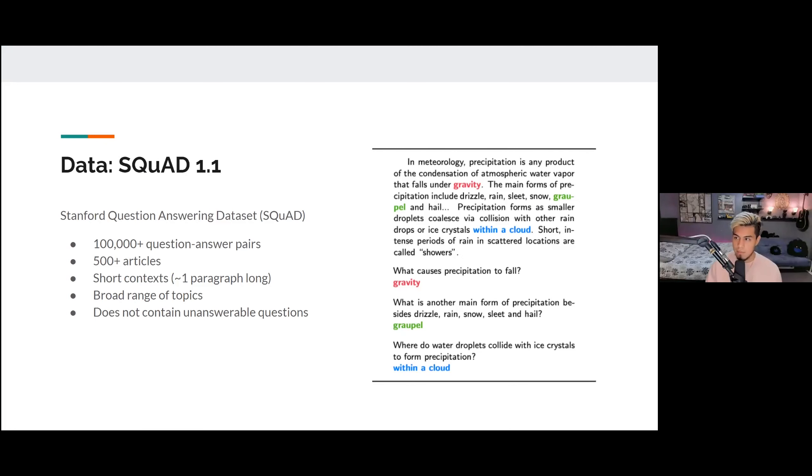So with our data, we use three data sets. We use SQUAD 1.1 as our out-of-domain data set. It is a Stanford question answering data set, has about 100,000 question answering pairs and over 500 Wikipedia articles that are extremely broad in topics. And they each have a short context and the way they work is that it's a span retrieval question answering system, where you can see in this example, the last question, where do water droplets collide with ice crystals to form precipitation? The blue answer within a cloud is exactly the same as it is inside the context above.